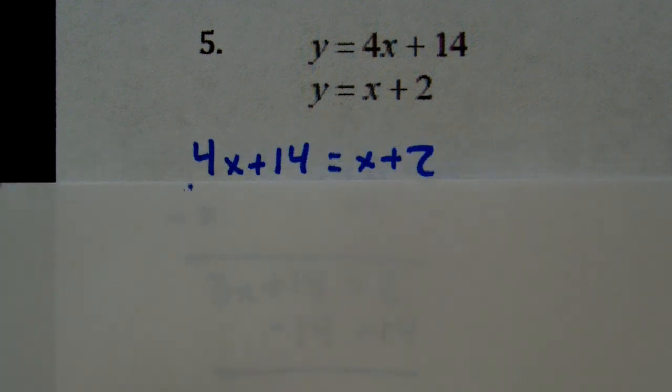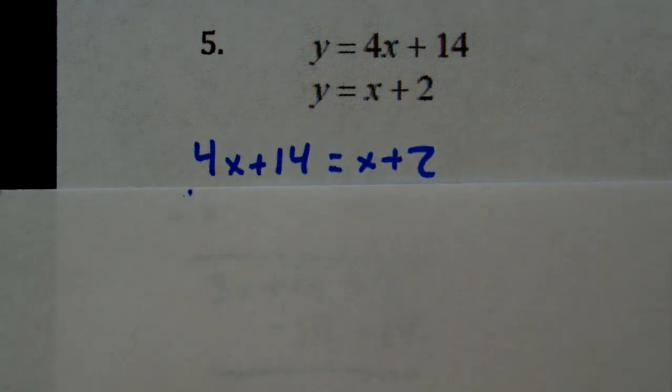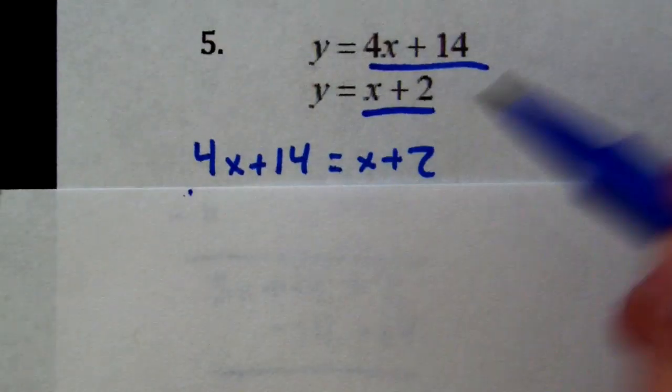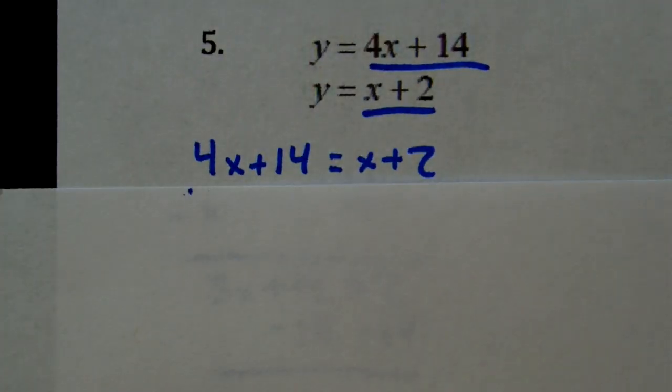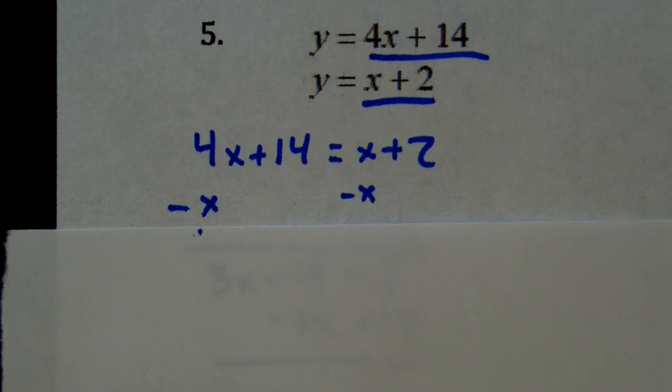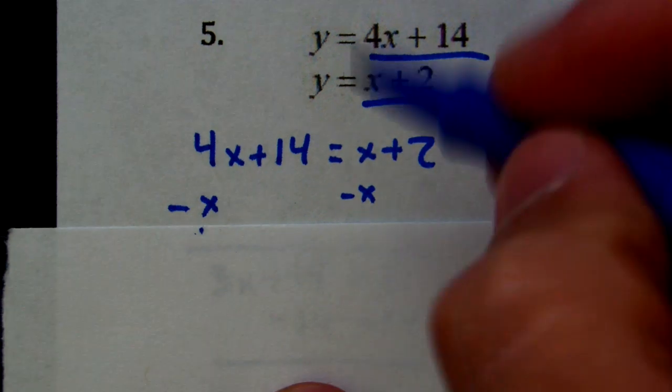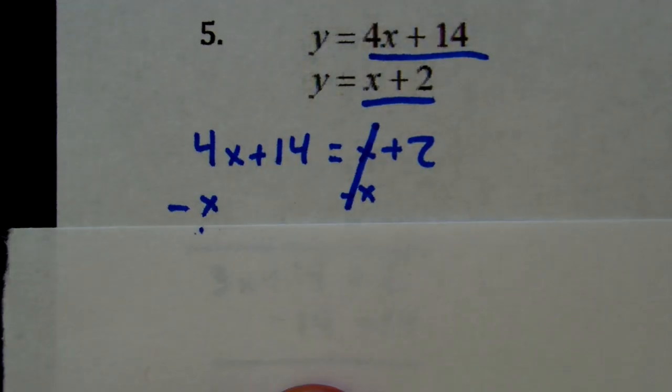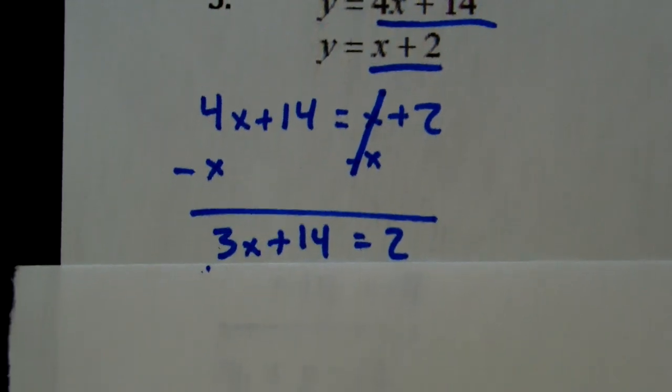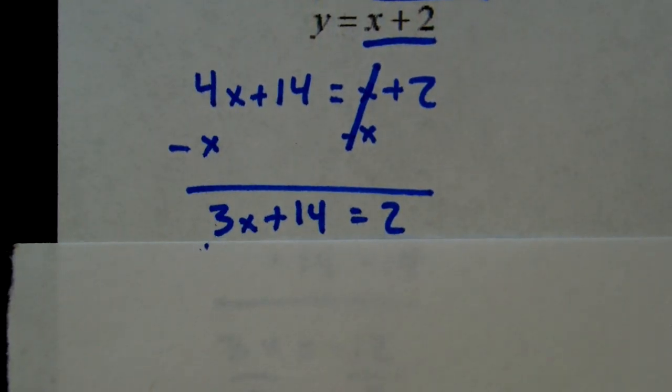So they're already solved for y, so I went ahead and did mx plus b equals mx plus b. I took this mx plus b and this mx plus b and set them equal to each other. Now, variables on both sides. We have to move the variable to one side, so x minus x cancels. 4x minus x is 3x, and we're left with 3x plus 14 equals 2.